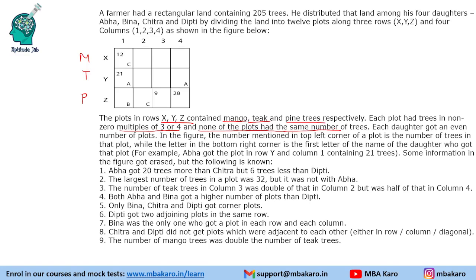Each daughter got an even number of plots. There are 12 plots and 4 daughters. If you give each daughter 2 plots, we are done with 8 plots. We need to give 4 more plots — either 2 more to 2 daughters or 4 to a single daughter. So we can have 2-2-4-4 or 2-2-2-6 as the two possibilities.